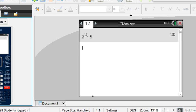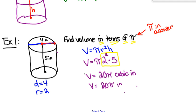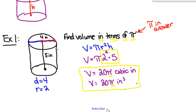My calculator tells me that two squared times five equals 20. I haven't multiplied by pi yet, so there's still a pi in my answer: 20 times pi, or 20π cubic inches — equivalently, 20π inches cubed. It might feel unfinished, but when they ask for volume in terms of pi, they want you to leave that pi in the answer and not multiply it through.